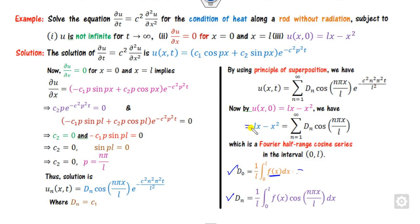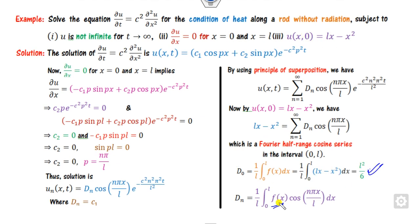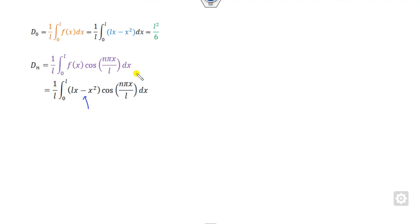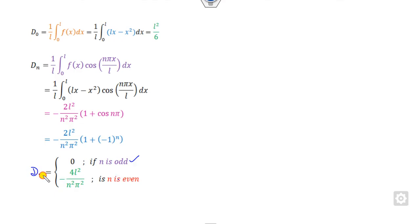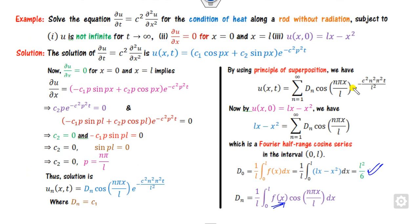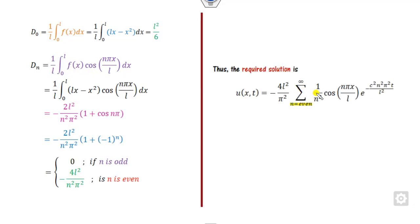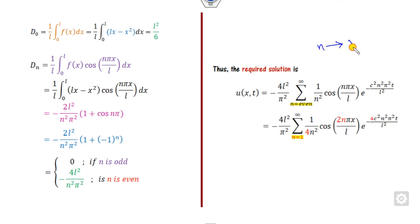f(x) is equal to Lx minus x squared. Substituting and integrating by parts, we find d_n. When n is even, the value becomes non-zero (2 times a certain factor); when n is odd, it becomes zero. Substituting the value of d_n back into the solution, we get the required answer. Since n is even, we change the summation index replacing n by 2n, adjusting the exponent to (2nπ/L)² and the sine argument to 2nπ/L, and so on.